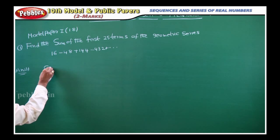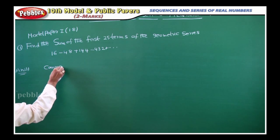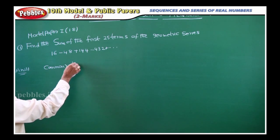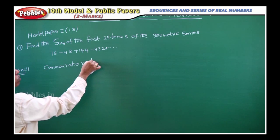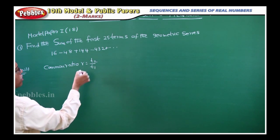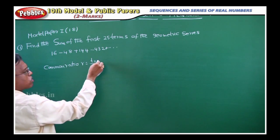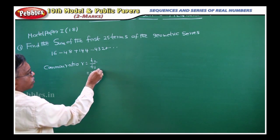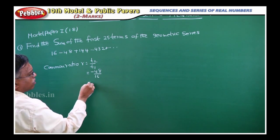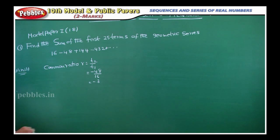That is common ratio, common ratio R is equal to T2 by T1, that means second term by first term. So that means what? Minus 48 by 16, nothing but minus 3.